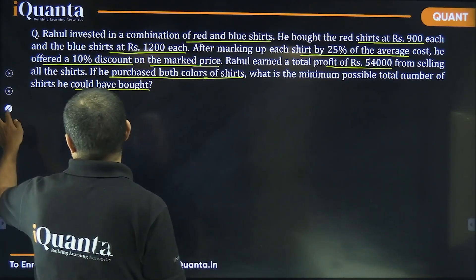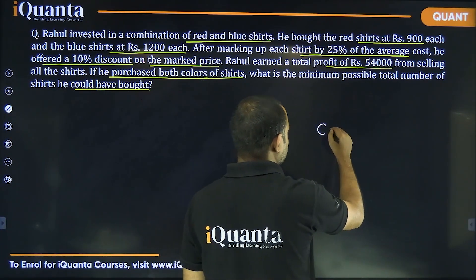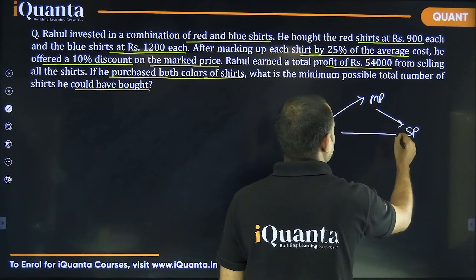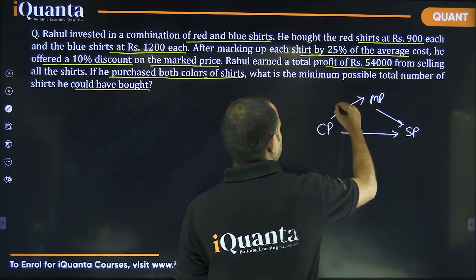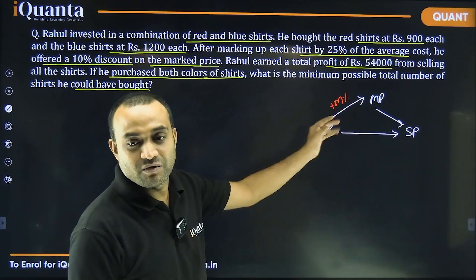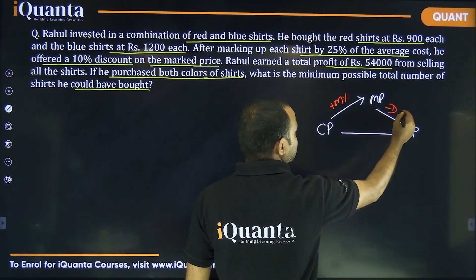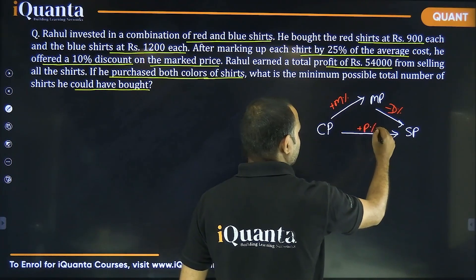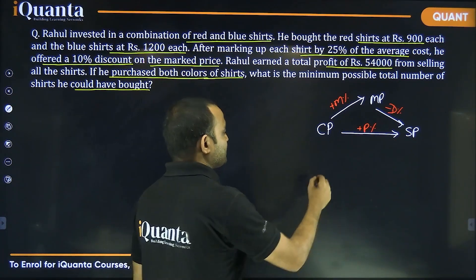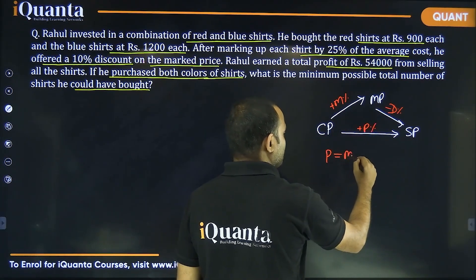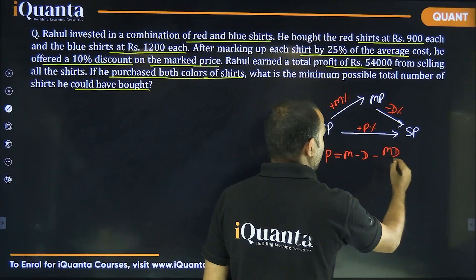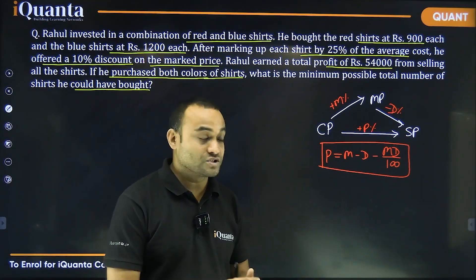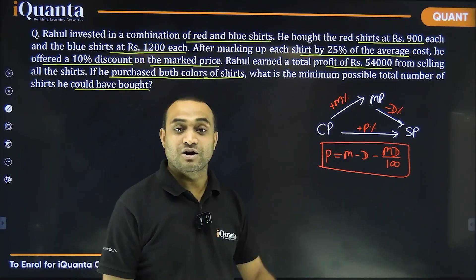First, let's recall the relationship between cost price, mark price, and selling price. Markup is applied on cost price to get mark price; discount is applied on mark price to get selling price, and the result of these two gives profit percentage. The profit percentage is always the successive combination of these two — markup is positive and discount is negative.